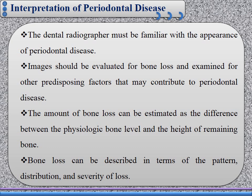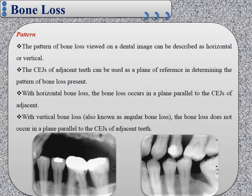Bone loss can be described in terms of pattern, distribution, and severity of the loss. According to the patterns, bone loss as viewed on the dental image can be classified into horizontal and vertical bone loss. The cementoenamel junction of the adjacent teeth can be used as a plane of reference in determining the patterns of bone loss. With horizontal bone loss, the bone loss occurs parallel to the plane of cementoenamel junctions of adjacent teeth, as we see in the first photograph.